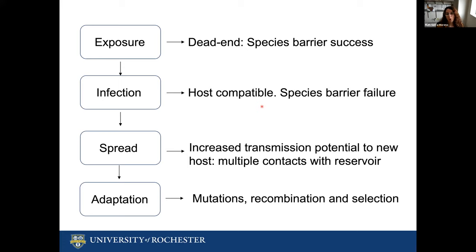If due to the growth in the human population there is an overlap with the habitat of the natural host, this increases the likelihood of future potential exposure events that can set the stage for adaptation, where the virus can accumulate mutations, undergo recombination events, and finally natural selection operates. An indication of such adaptation is the presence of human-to-human transmission, where the interaction with the direct host is no longer required.